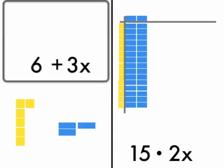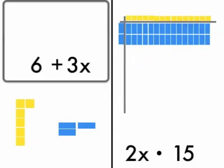If we look on the right hand side, that is for multiplication. So we went from 15 times 2x to 2x times 15. And again, it doesn't really change anything enough to make a big difference.